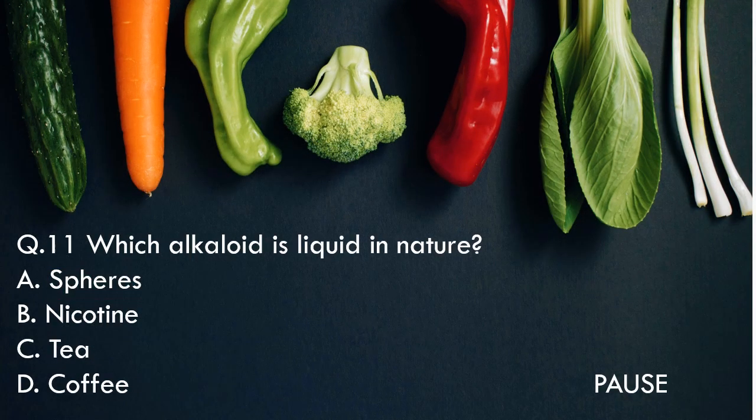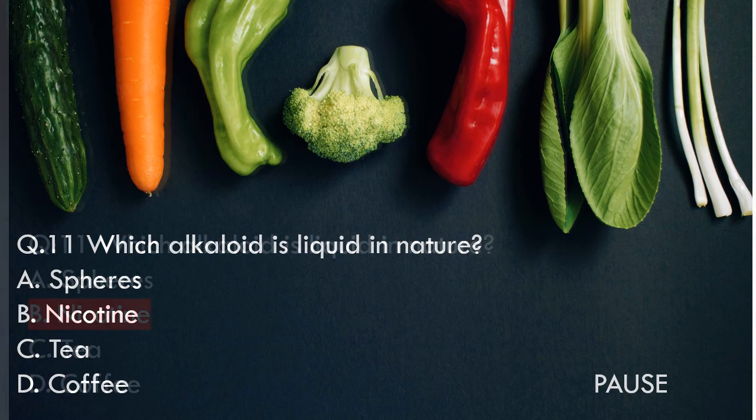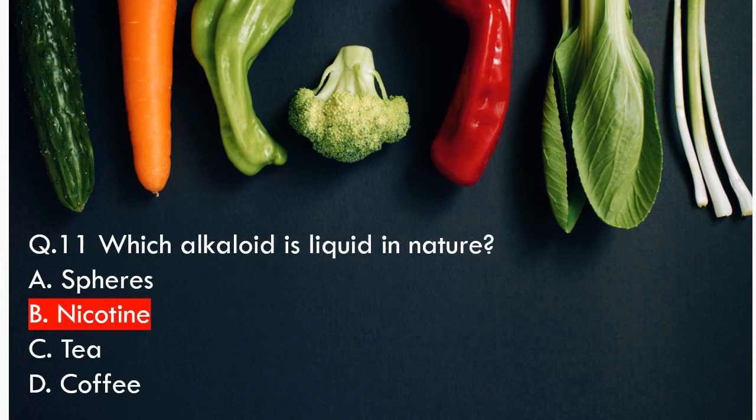Question 11: Which alkaloid is liquid in nature? Option A, Sparteine. Option B, Nicotine. Option C, Tea. And option D, Coffee. And the right answer is Nicotine. So Nicotine is an alkaloid that is liquid in nature.